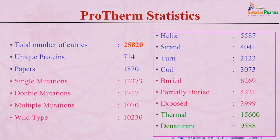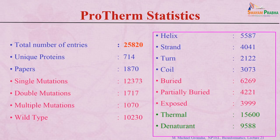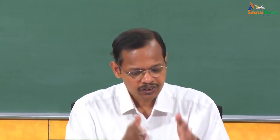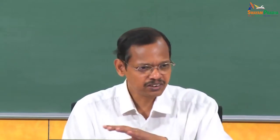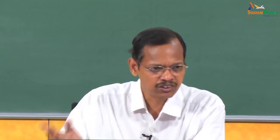Looking at the database statistics, there are more than 25,000 entries obtained from about 700 to 1,800 proteins from around 2,000 papers. In terms of mutation types, single mutations dominate at about 12,000, with some double and multiple mutations. For the wild type there are about 10,000 data points, though some are redundant due to the same protein measured under different conditions.